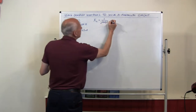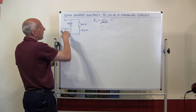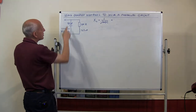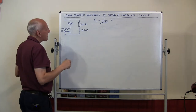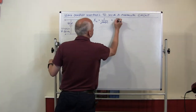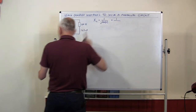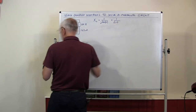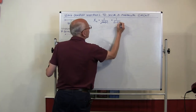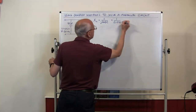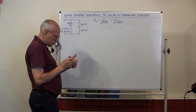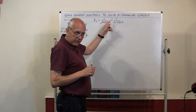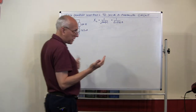Putting in the numbers: frequency is 100 Hz, capacitance is 80 microfarads (80 × 10⁻⁶). That gives 1 over 0.0503, which works out to just under 20 ohms impedance. I'm going to leave it in that form for a reason that will become clear shortly.